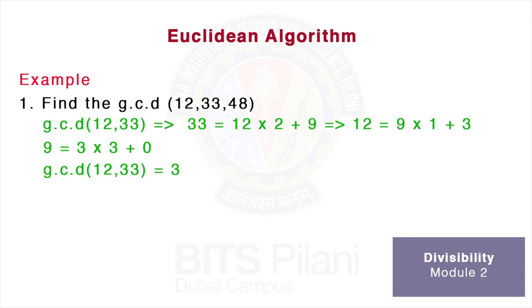Next, we find the GCD of 3 and the next number 48. Using the Algorithm, we find that GCD(3, 48) = 3.